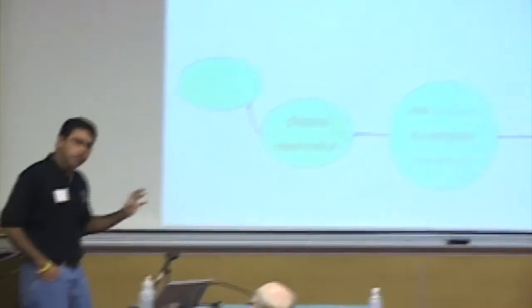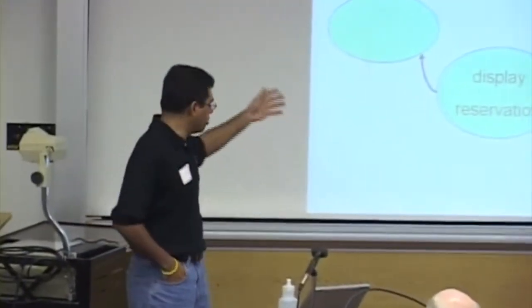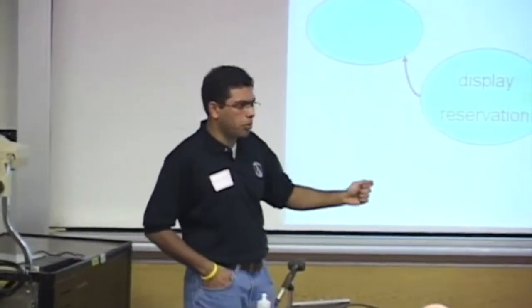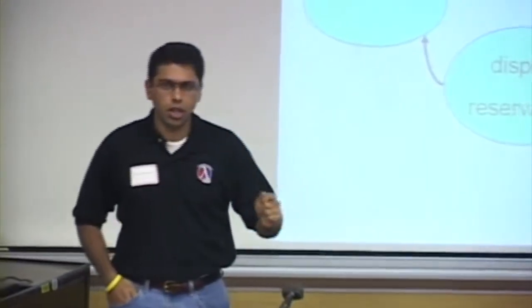Here's an interesting thing. If I take this state machine, a little more detailed version of this, and I feed it to my model checker and give it the property that I explained to you before, the model checker comes back and says, this program is fine. There's no error.